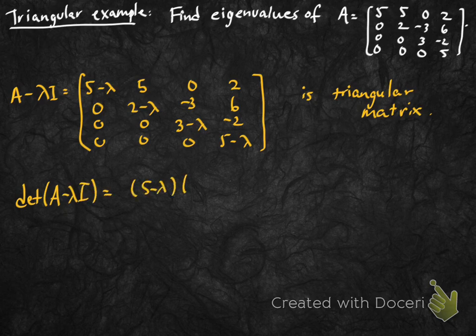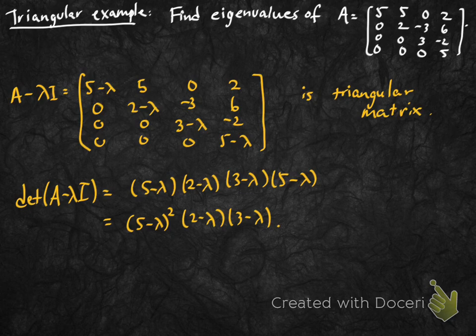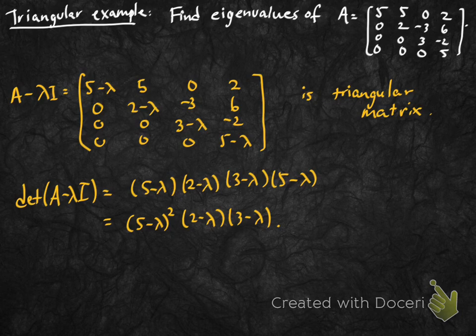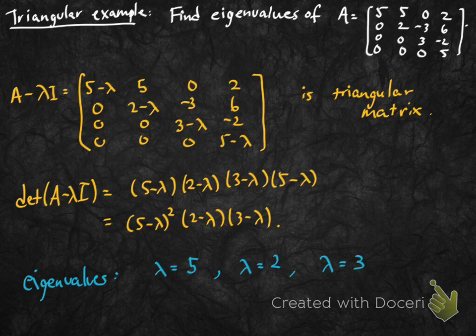Since we still have a triangular matrix, the determinant is easy to compute — it's just the product of the diagonal entries. We get 5 minus lambda appearing twice, a 2 minus lambda, and a 3 minus lambda. I'll leave it in factored form to read off the roots, so the eigenvalues are 5, 2, and 3.